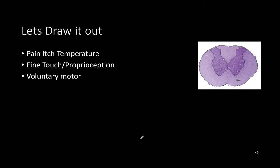The key to remember: the dorsal column and motor both cross at the medulla, while pain and temperature cross at the level of the spinal cord via the lateral spinothalamic tract.